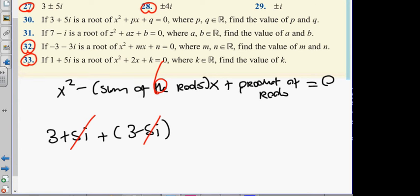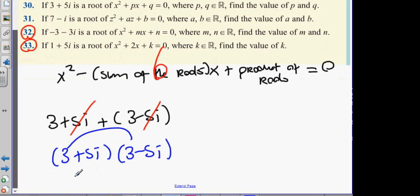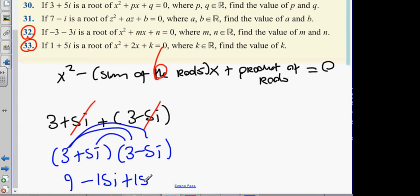And then the product of the roots is going to be 3 plus 5i, and then 3 minus 5i. And this is the product in blue: 3 multiplied by 3, 9; 3 multiplied by 5i, minus 15i; 3 multiplied by 5i, plus 15i; 5i multiplied by minus 5i, minus 25i squared.